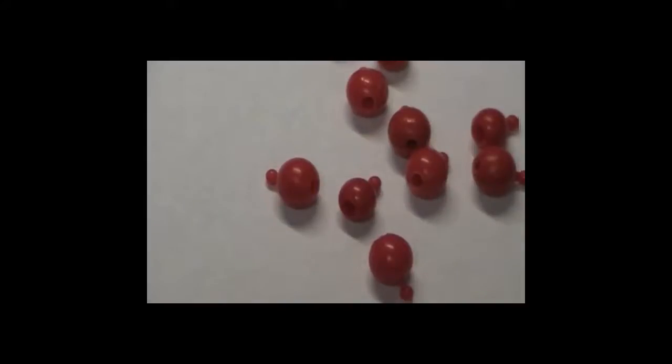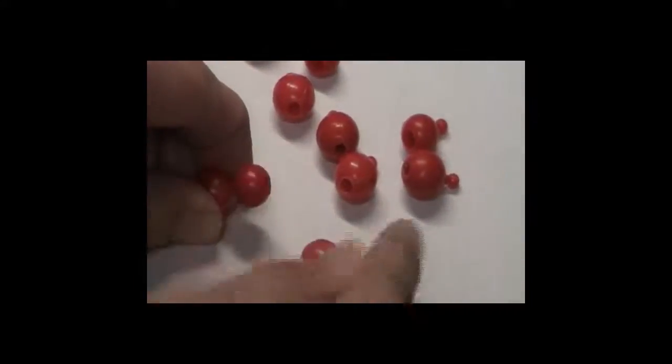One way to think about the process of making and breaking down polymers is to use beads like this to visualize the process. Single monomers, represented by the single beads, are linked together to form a chain.